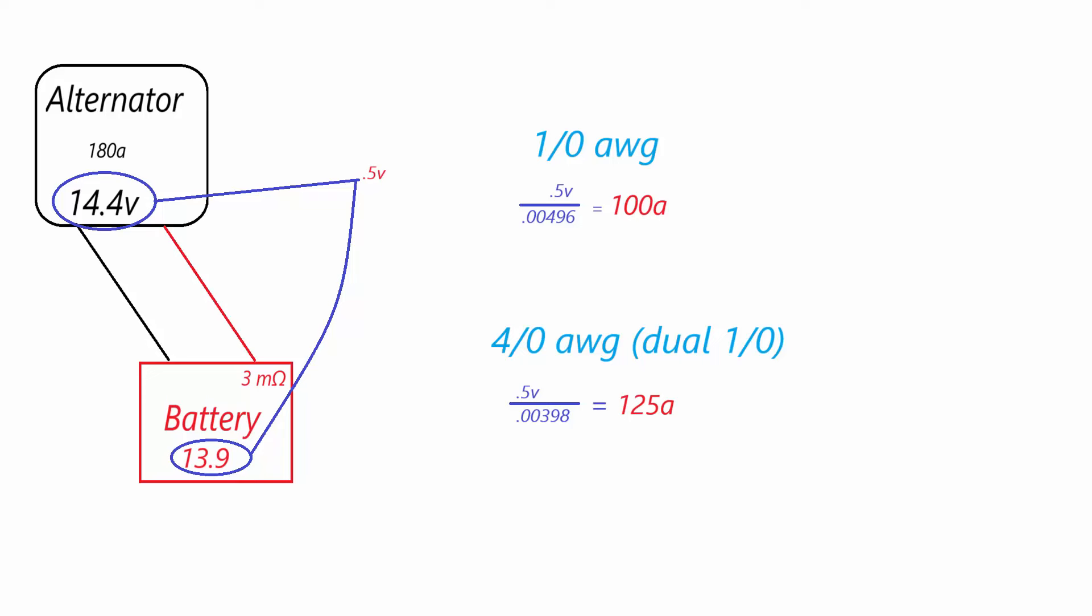As you can see in this example, using one zero AWG wire, we would have a maximum output of 100 amps. This doesn't matter if your alternator is 180 amps or 340 amps. Only 100 amps will flow back. Ohm's law restricts the current here. Even using dual one zero, which is the equivalent to 40 AWG, we would have a maximum of 125 amps. So doubling your wire or having the resistance of your wire in this case would only yield a net gain of about 25 amps of potential current that can charge the battery.